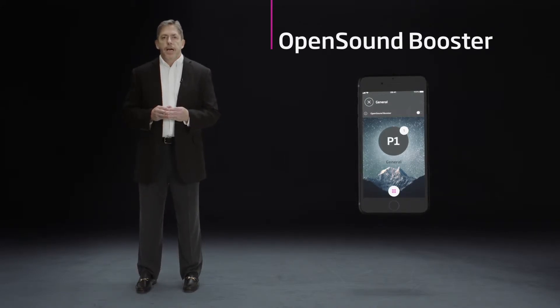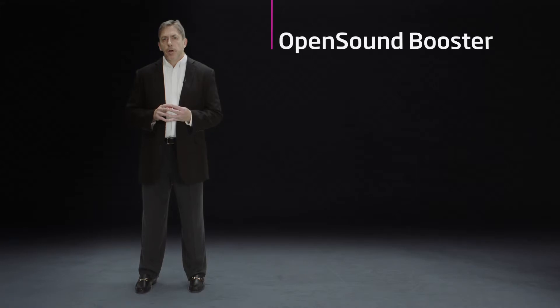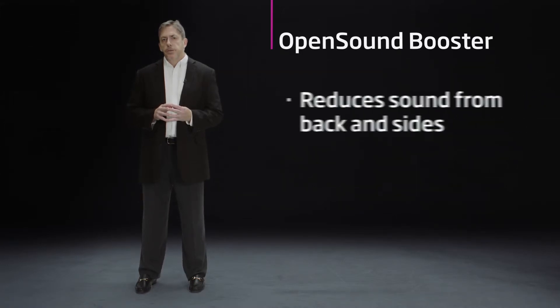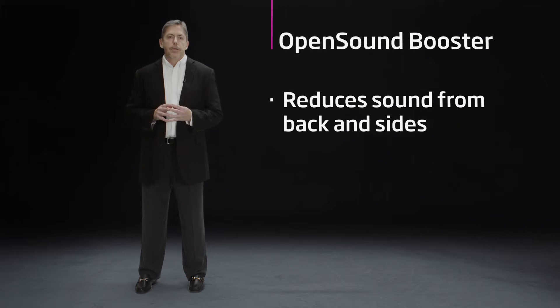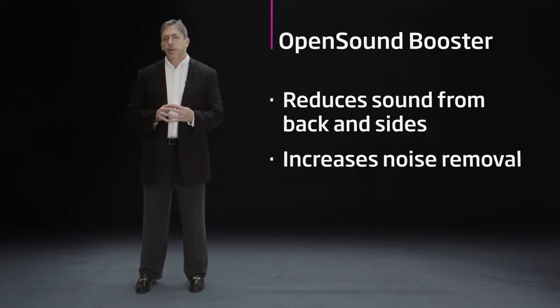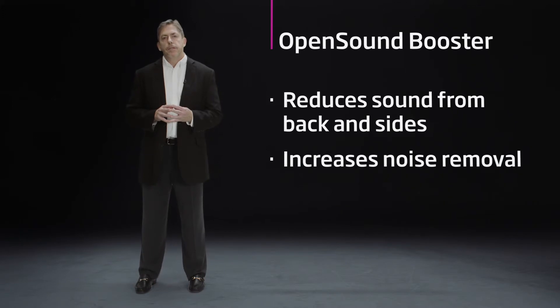OpenSound Booster is activated via a simple button push on the Oticon On app. Once activated, OpenSound Booster will be more aggressive about reducing sounds coming from the backs and sides, and will allow the noise removal function to attack noise coming from all around the child in a more aggressive manner.